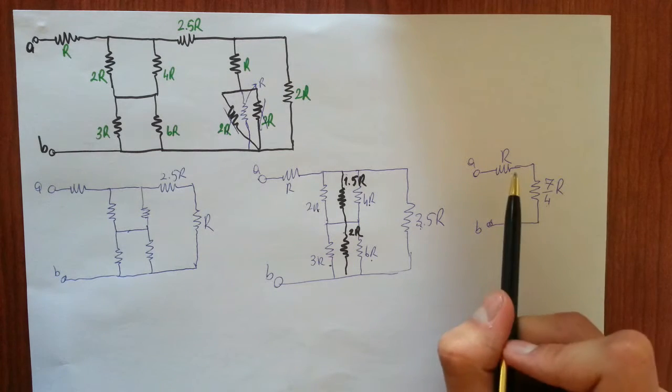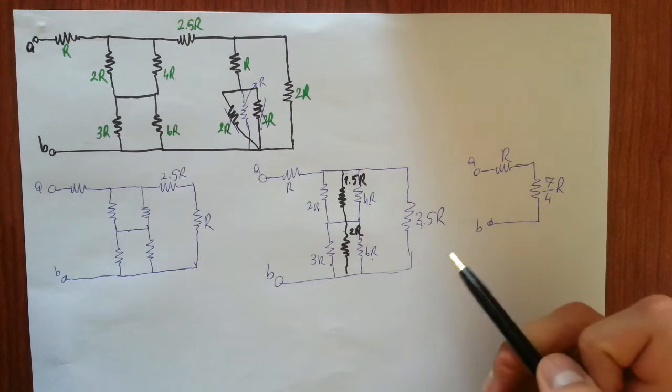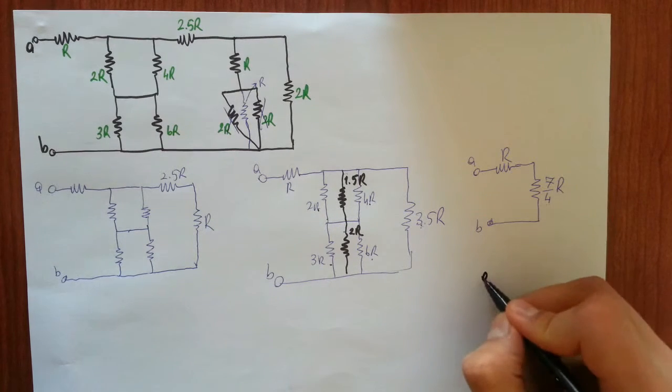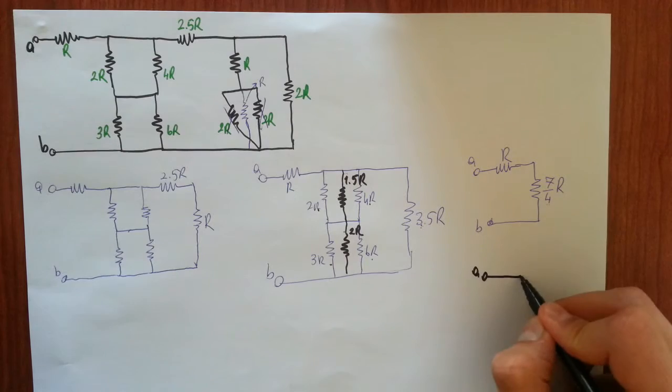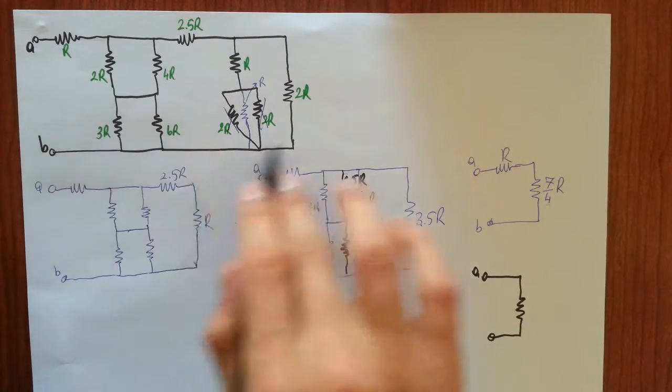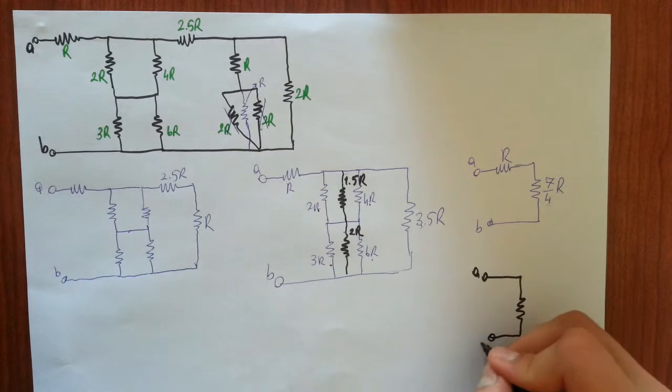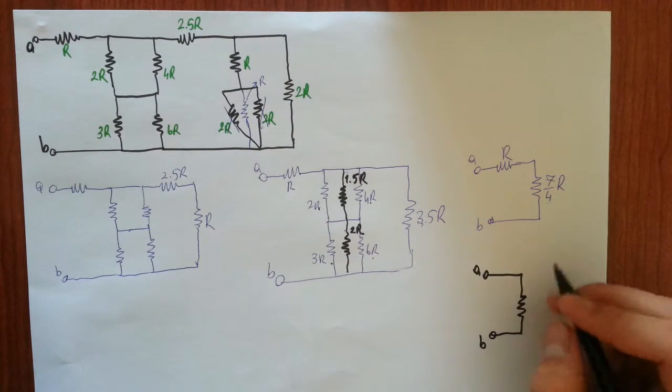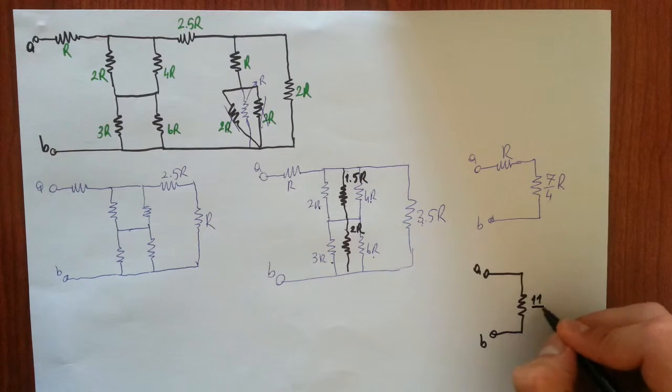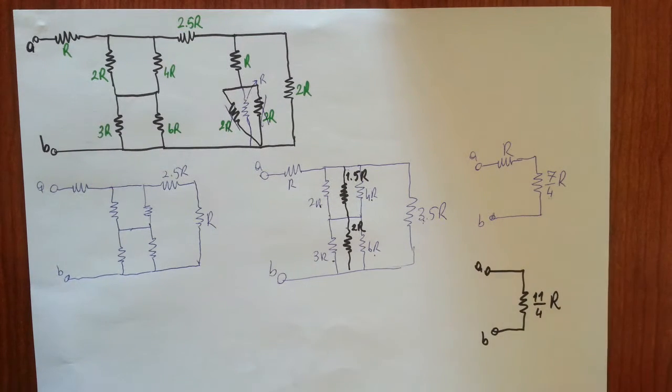And the last step is, these are in series, so let's sum them up. Terminal A, one single equivalent of this whole schematic with 11 over 4R resistance.